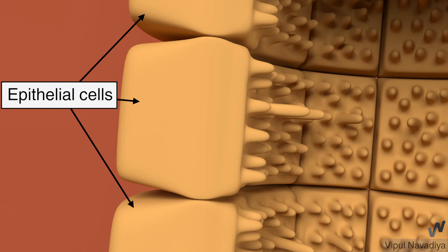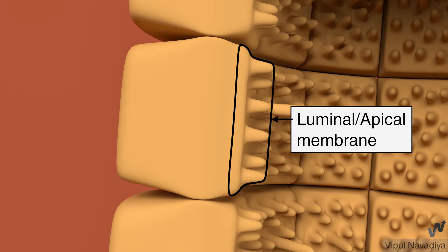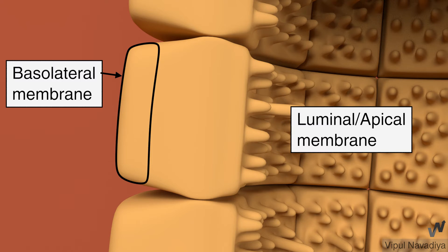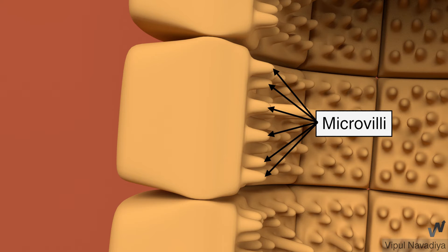The tubule is made up of a single layer of epithelial cells. The side of the cell facing the lumen is called the luminal or apical membrane, and the opposite side is called the basolateral membrane. Luminal membrane has numerous microvilli, which increase the available surface area for tubular processing. Their number varies along the different parts of the tubule.